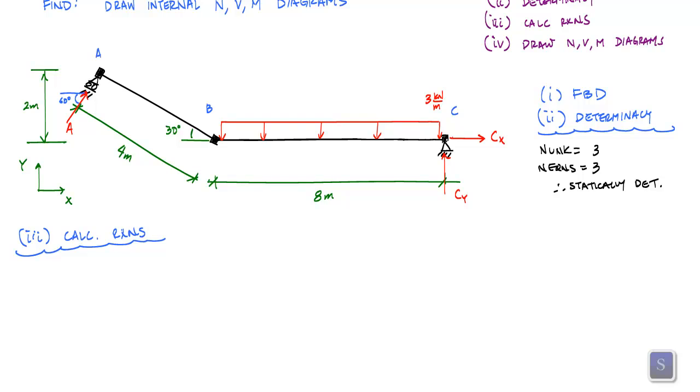The first thing I'm going to do is apply sum of the forces in the horizontal. From sum of the forces in the horizontal, I would get that CX plus A cosine of 60 degrees is equal to zero. Then I can do sum of the forces in the vertical, positive upwards. Here I would have CY plus A sine of 60 degrees minus the result of this uniformly distributed load, which is three kilonewtons per meter times eight meters equal to zero. You can see I still have two equations and three unknowns, so now I need a moment equation.